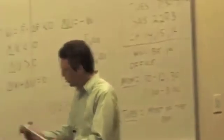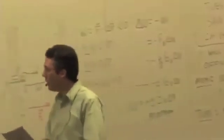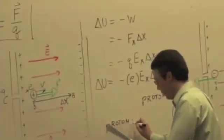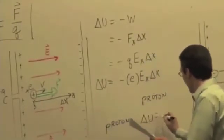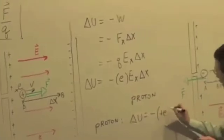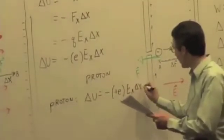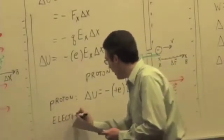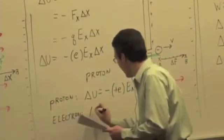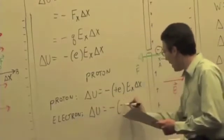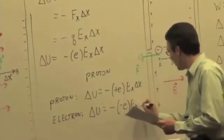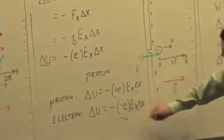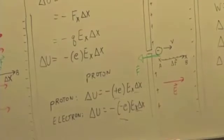OK, if I do it for the proton, it's the negative of a positive e times e sub x delta x. And if I do it for the electron, I could write it this way. I have a negative times a negative e, e sub x times delta x. So the only thing that's different here is the charge. The e sub x times delta x is the same in both of those expressions.